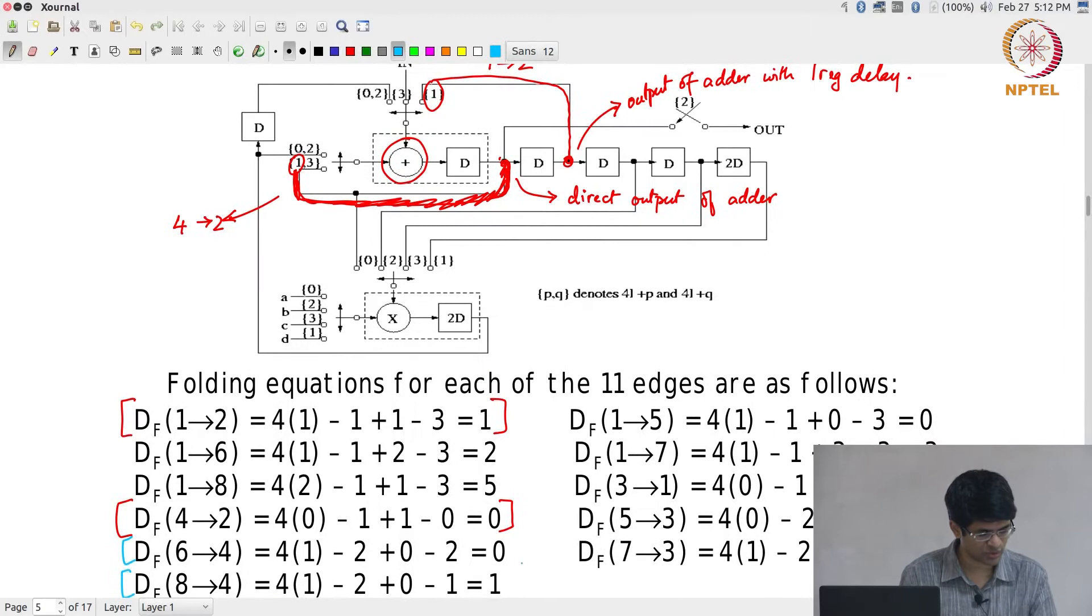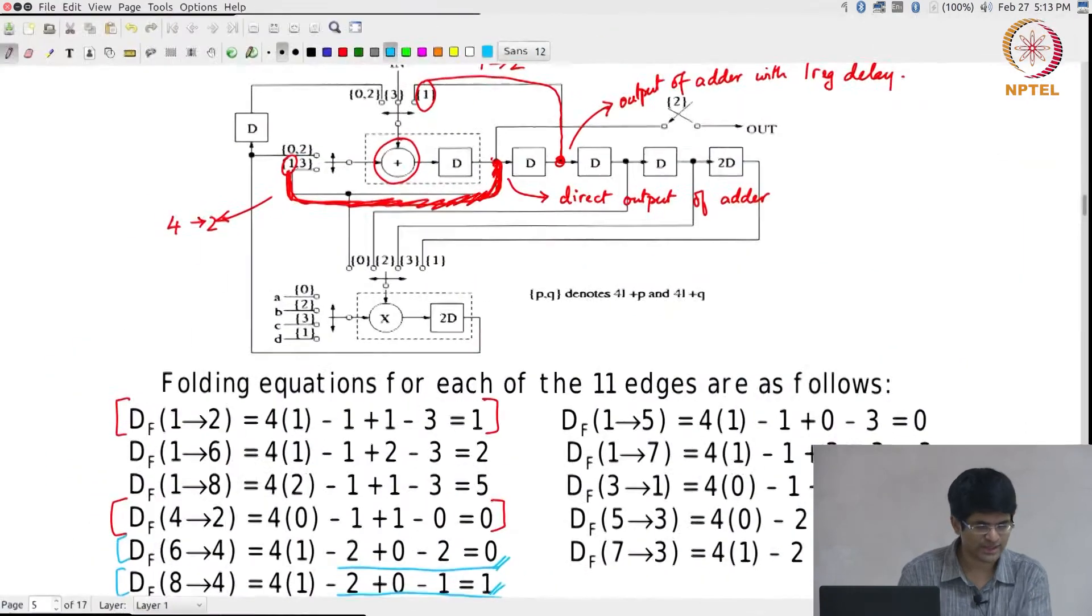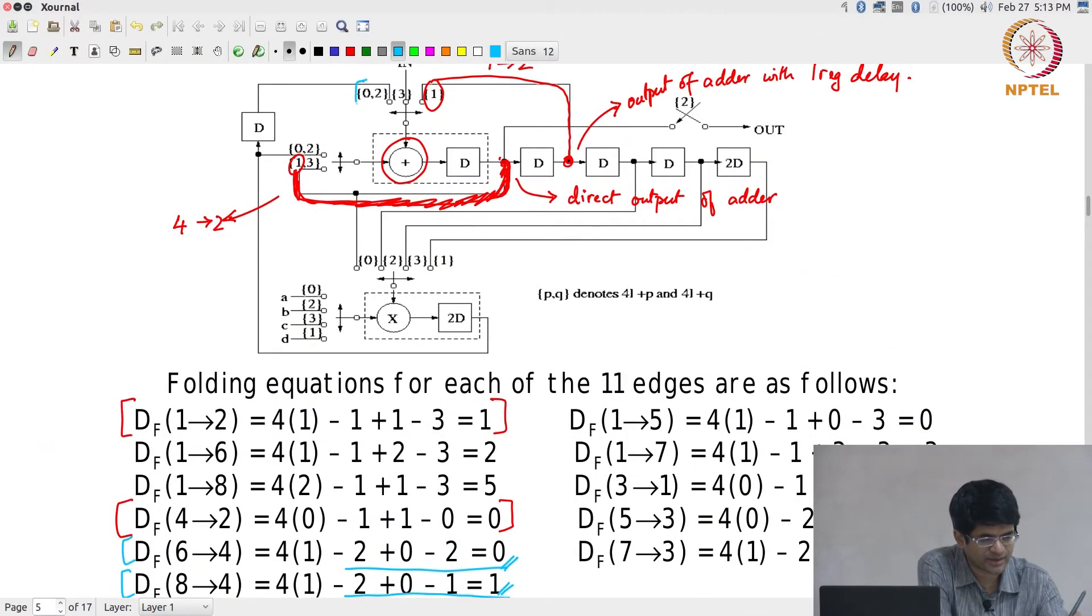If I work through this, what I will find is that the DF for 8 to 4 comes out to be equal to 1 and from 6 to 4 works out to be equal to 0. In terms of the hardware, what does that mean? It means that at what time instant was 4 scheduled at time 0. Let us go look at the inputs to the adder at time 0. This is one, this is the other.